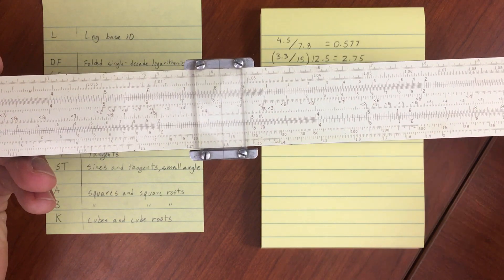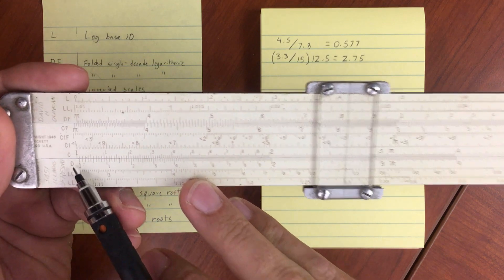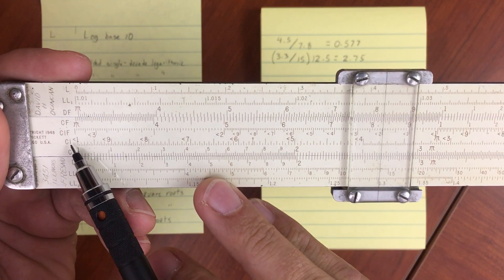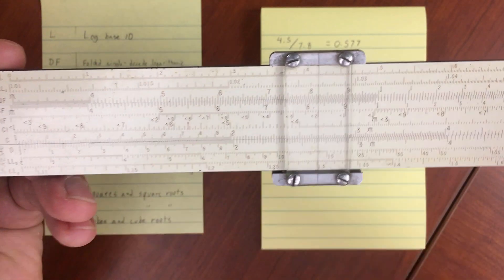Alright, so we're going to be doing division. We're going to be using the D scale, as we've done before with multiplication, and then we're also going to be using the CI and the CIF, and those are the reciprocal of the C scale.